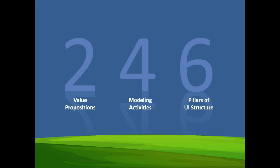To leave you with a summary: two value propositions, four modeling activities, and six pillars of UI structure — a rubric that you can actually say in a sentence that almost makes sense: two value propositions, four modeling activities, across six pillars of UI structure.